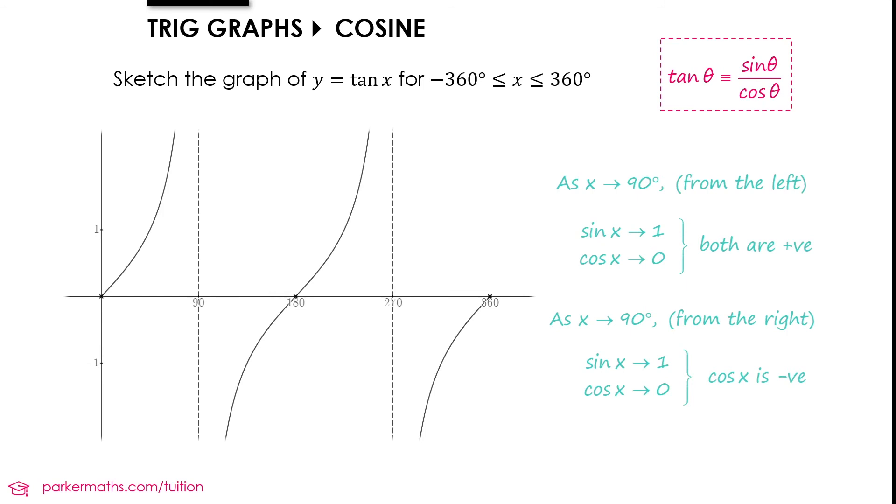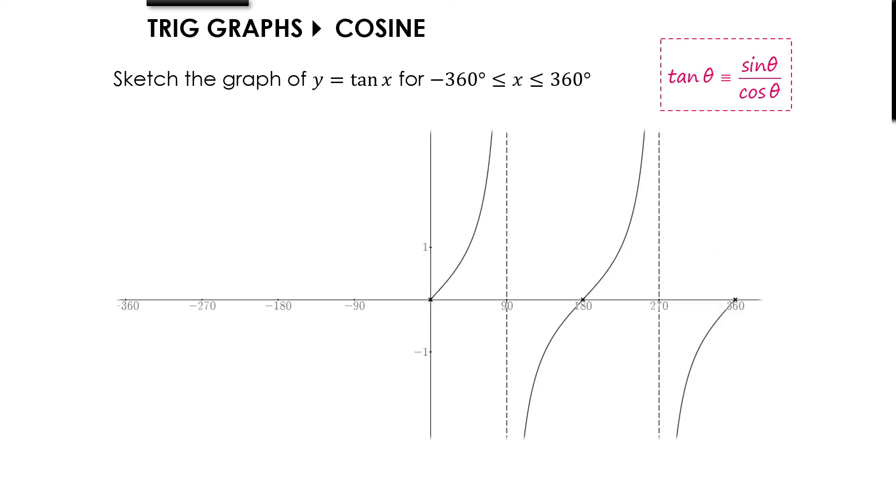We're supposed to be drawing this graph between minus 360 and 360, so we need to complete this repeating pattern going to the left. We need asymptotes at minus 90 and minus 270. The curve will go through 0 at minus 180 and minus 360, and we'll continue the pattern. That's our graph of y equals tan x between minus 360 and 360.